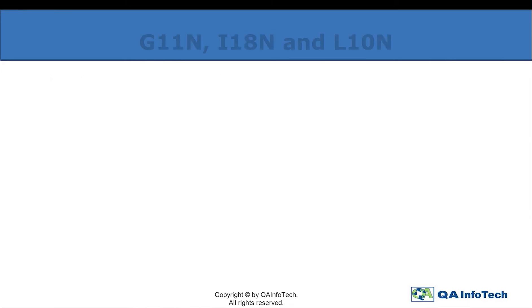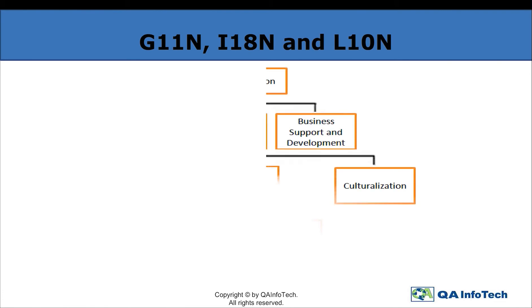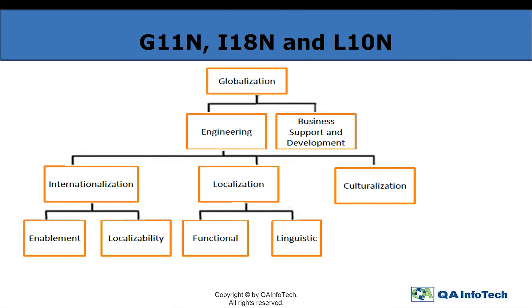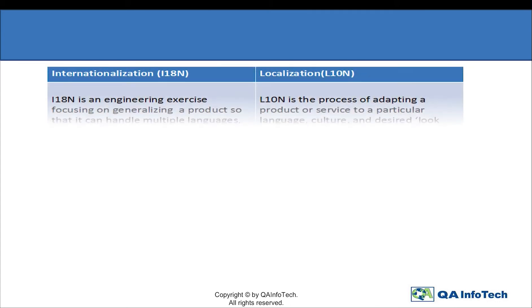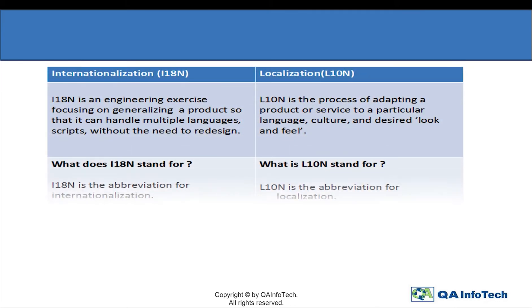When we talk about globalization, we essentially refer to it as a combination of internationalization, localization, and culturalization — in making an application independent with respect to any specific region or culture. Here is an engineering structure of any product which needs to be globalized. Let us now delve deeper into what internationalization and localization stand for.